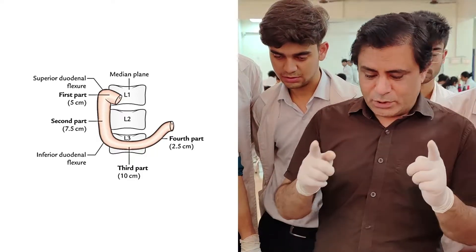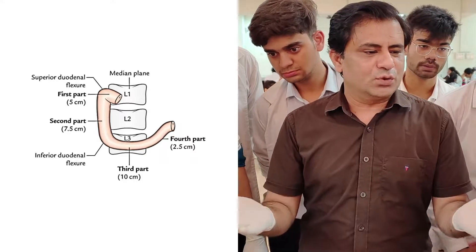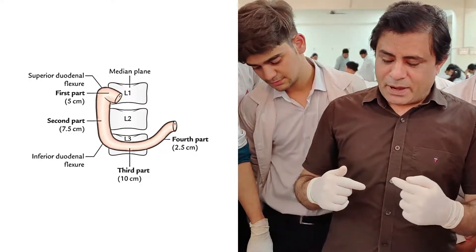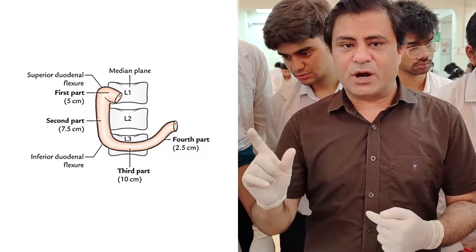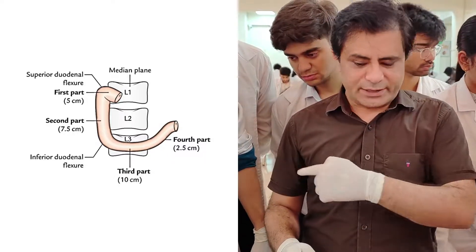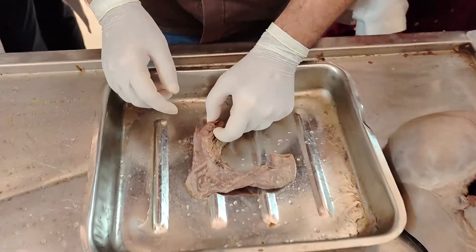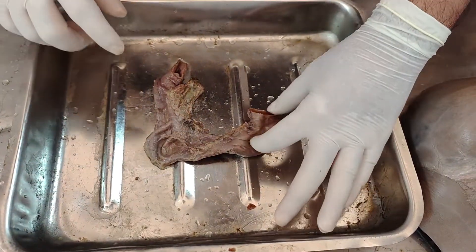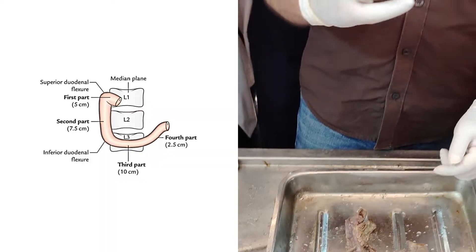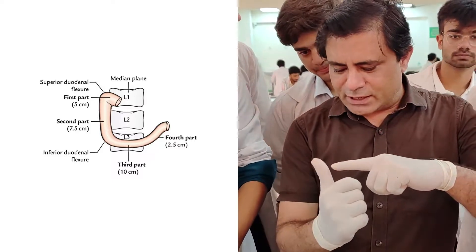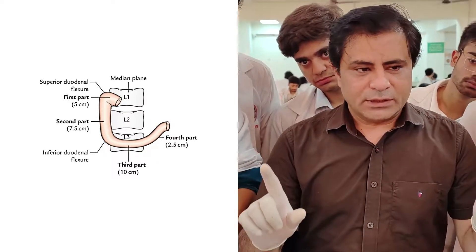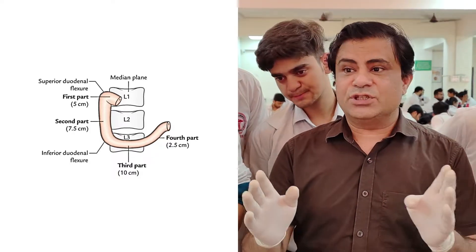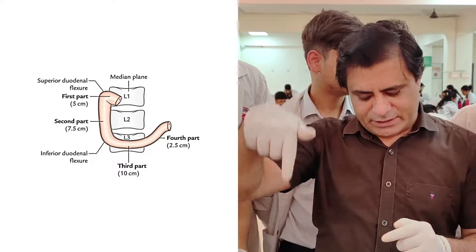The transpyloric plane, which everyone knows passes through the lower end of L1 vertebra, is where the pylorus lies. The first part of the duodenum continues from the pylorus and is directed backwards and upwards, so the first part lies opposite L1 vertebra. It is about 5 cm, which is 2 inches. Then it has a flexure and descends downward into the second part.